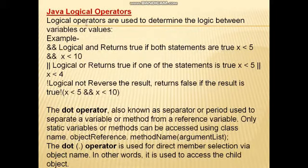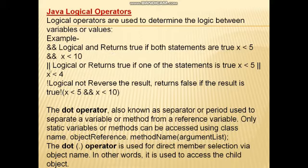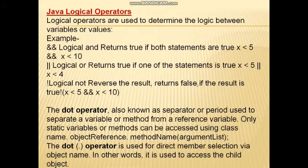Java logical operators are used to determine the logic between variables or values. Double ampersand (&&) is logical AND — it returns true if both statements are true. For example, x < 5 && x < 10: both statements must be true. Double pipe (||) is logical OR — it returns true if one of the statements is true. For example, x < 5 || x < 4 will return the true condition. The exclamation mark (!) is logical NOT — it reverses the result and returns false if the result is true.